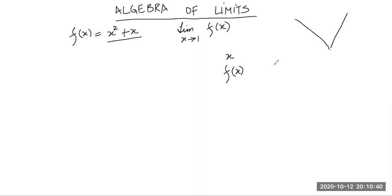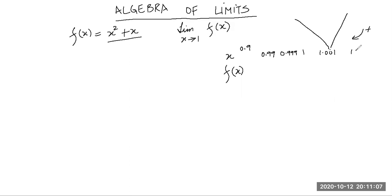This is the value of f(x). We'll try to reach 1 from the left side and from the right side. We'll try to reach by 0.999, then 0.99 and 0.9. And we will come from the positive side — we can take 1.001, 1.01, 1.1, or maybe 1.2. It doesn't matter.